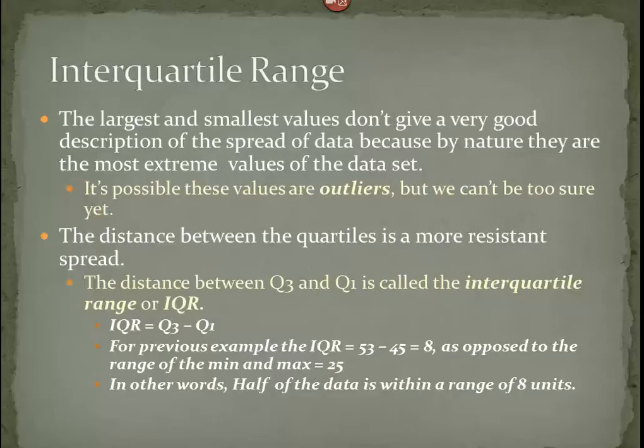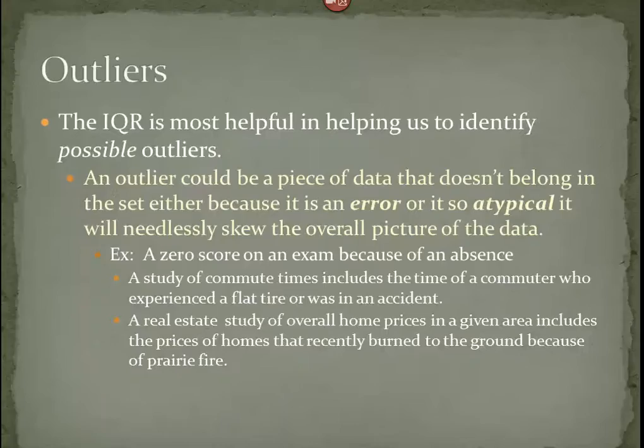One of the things that we do with the center quartile range is to use it to help us identify potential outliers. An outlier could be a piece of data that doesn't really belong in our set of data, either because there was an error made when it was being collected, or just because it's so atypical, it needlessly skews the overall picture of the data. I gave the example of zero on an exam because of an absence. That would have a big effect on my overall picture.